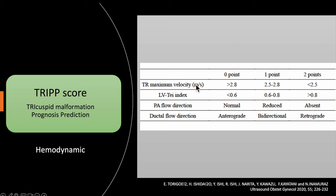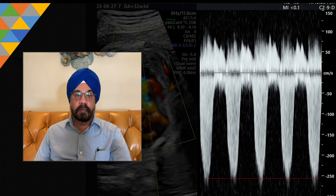The TRIP score uses tricuspid regurgitation maximum velocity, because the TR jet velocity reflects the pressure the RV generates — so RV pressure is very important for prognostication and indicates residual RV function after atrialization. RV can also cause LV dysfunction by displacement of the interventricular septum, so the LV TEI index is a very important prognosticator. Pulmonary forward flow and ductal flow are also included. A score more than five indicates bad prognosis.